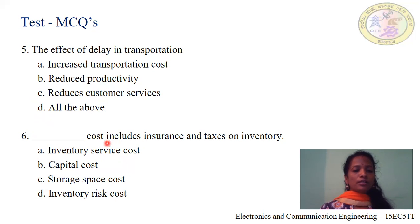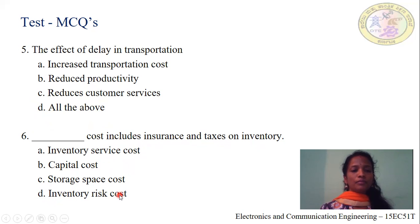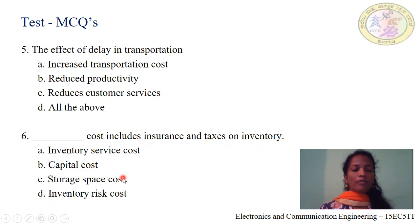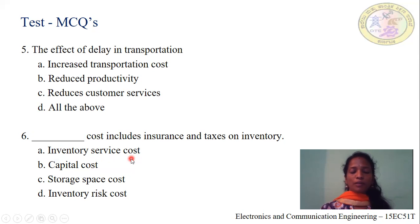Question number 6: Dash cost includes insurance and taxes on inventory. Option A: inventory service cost. Option B: capital cost. Option C: storage space cost. Option D: inventory risk cost. We have seen these are inclusive of demurrage charges paid for undue detention of goods. The cost which includes insurance and taxes on inventory is inventory service cost. Hence, option A, inventory service cost, is correct for question number 6.